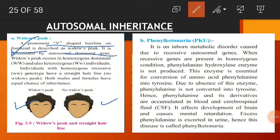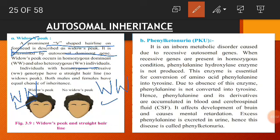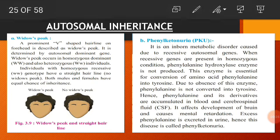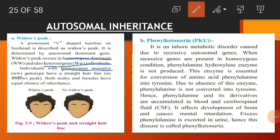Widow's peak occurs in homozygous dominant WW individuals. WW indicates the homozygous dominant condition, whereas heterozygous individuals with capital W and small w also show widow's peak. So either WW or Ww, both conditions result in widow's peak. Individuals with homozygous recessive condition, small w small w, have a straight hairline. So widow's peak indicates either homozygous dominant or heterozygous individuals, while straight hairline always involves homozygous recessive individuals.